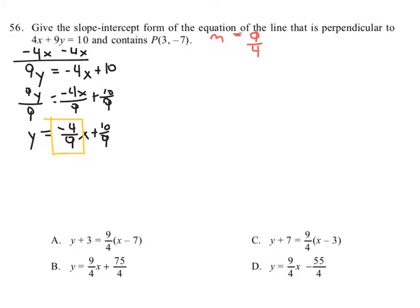So now what we're going to do is we're going to take the slope that we know we need to use, 9 fourths, and we're going to take the point that they gave us and we're going to write an equation in point-slope form: y minus y₁ equals m(x minus x₁).